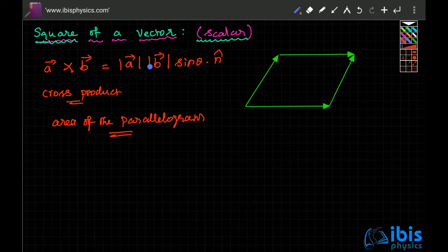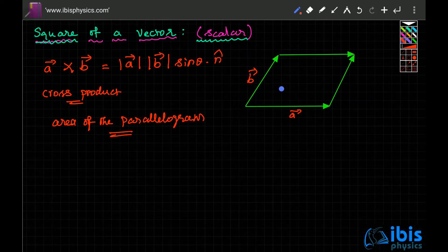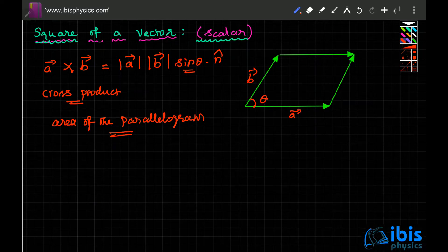Here, n-cap is perpendicular to both a and b. If a and b lie in the x-y plane, n-cap is along the z-axis, which comes out of the screen. The angle θ here is the angle between the two vectors, and sin θ is used in the formula.